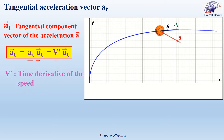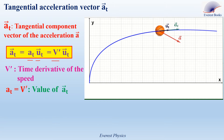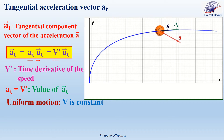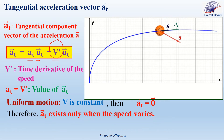v' is the derivative of the speed. a_T is simply the value of the tangential acceleration vector. Now, remember that in uniform motion the speed is constant. If the speed is constant, then its derivative with respect to time is 0. Therefore, a_T equals 0. We conclude that the tangential component of the acceleration exists only when the speed varies.